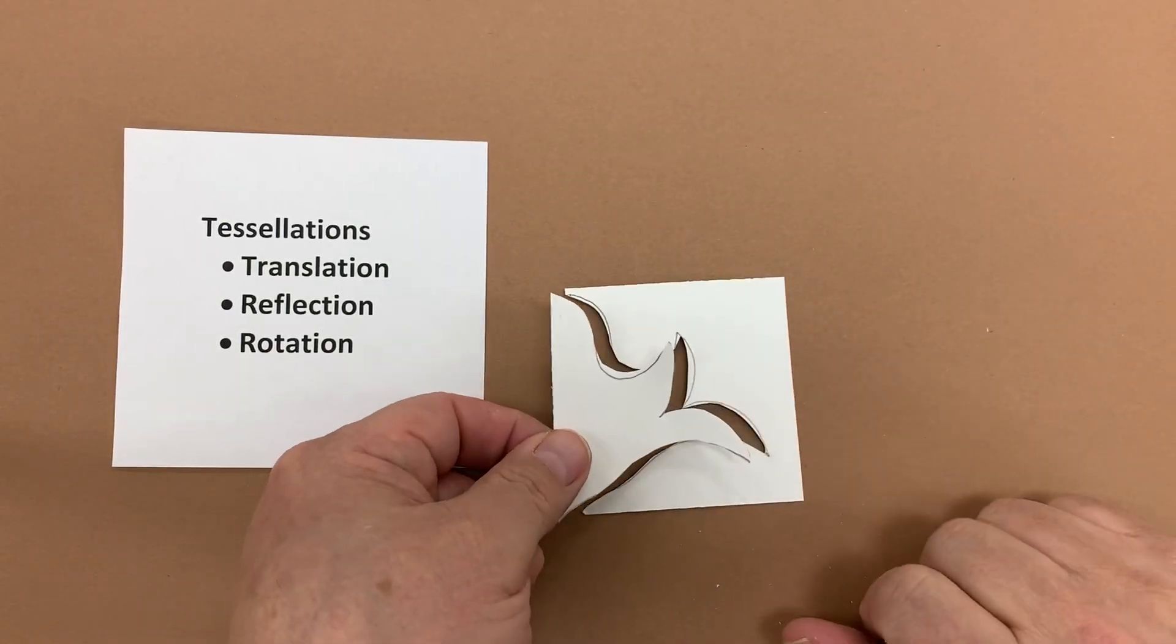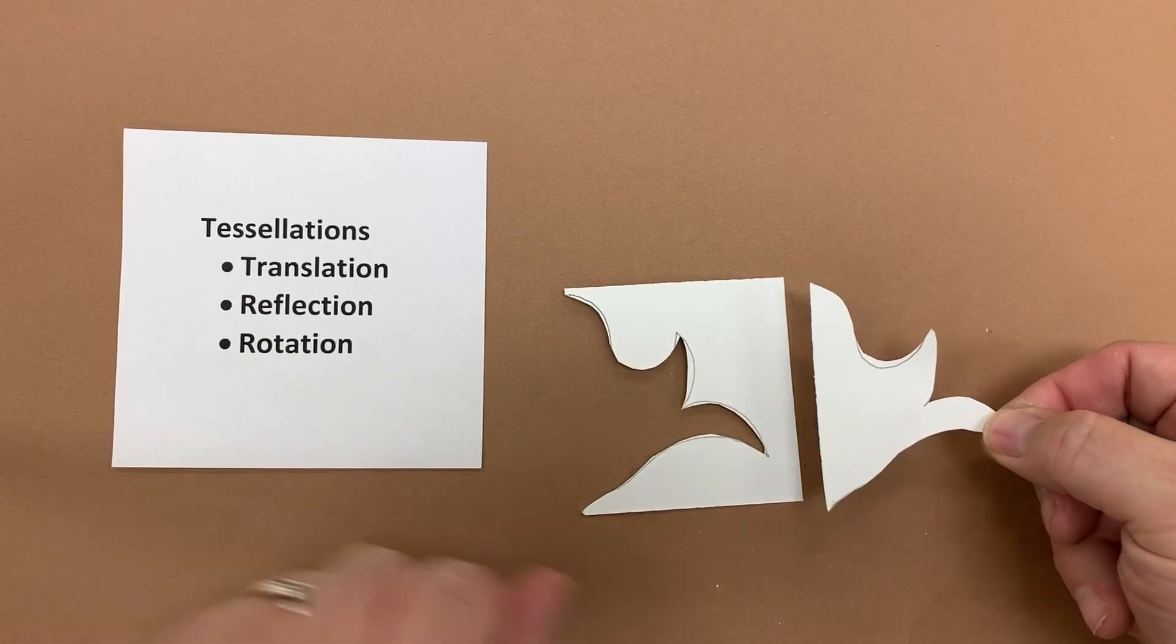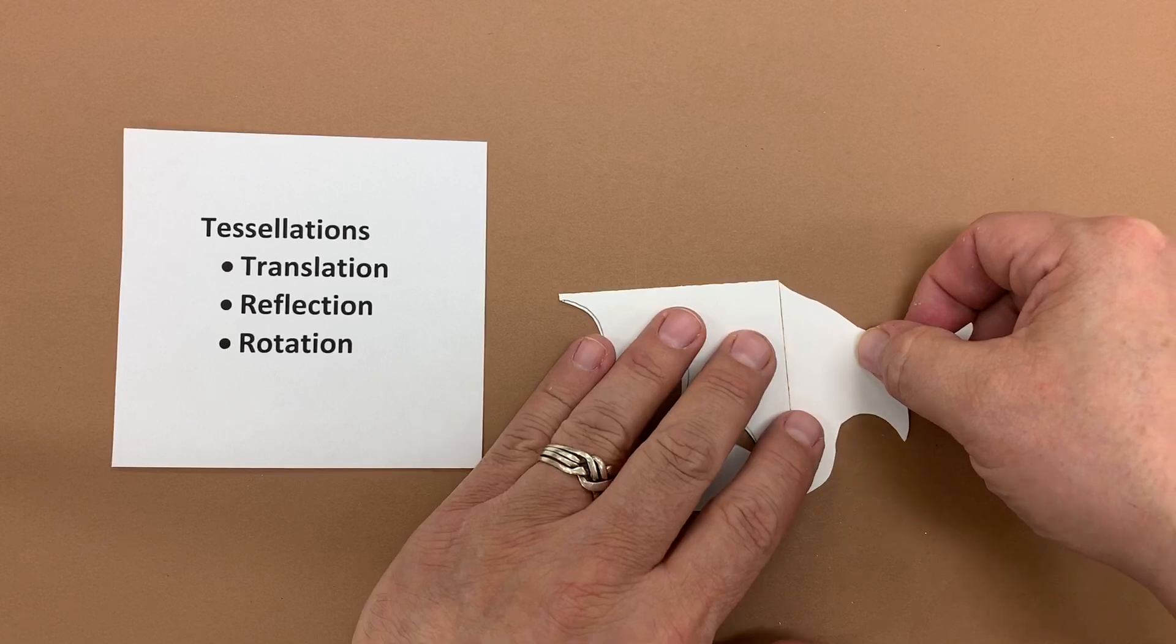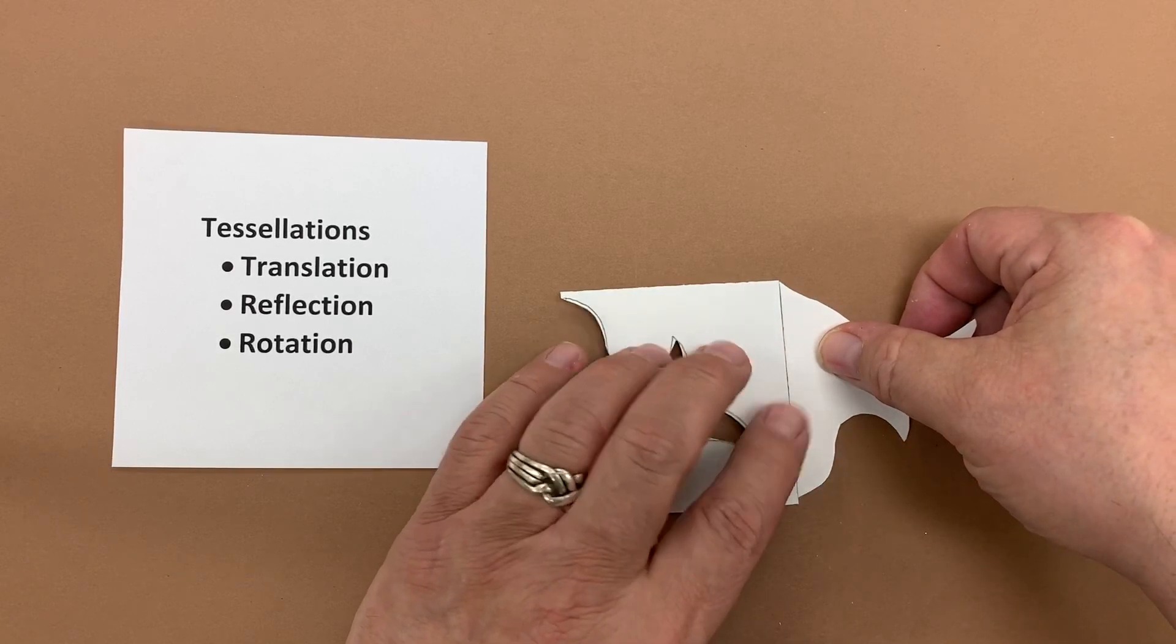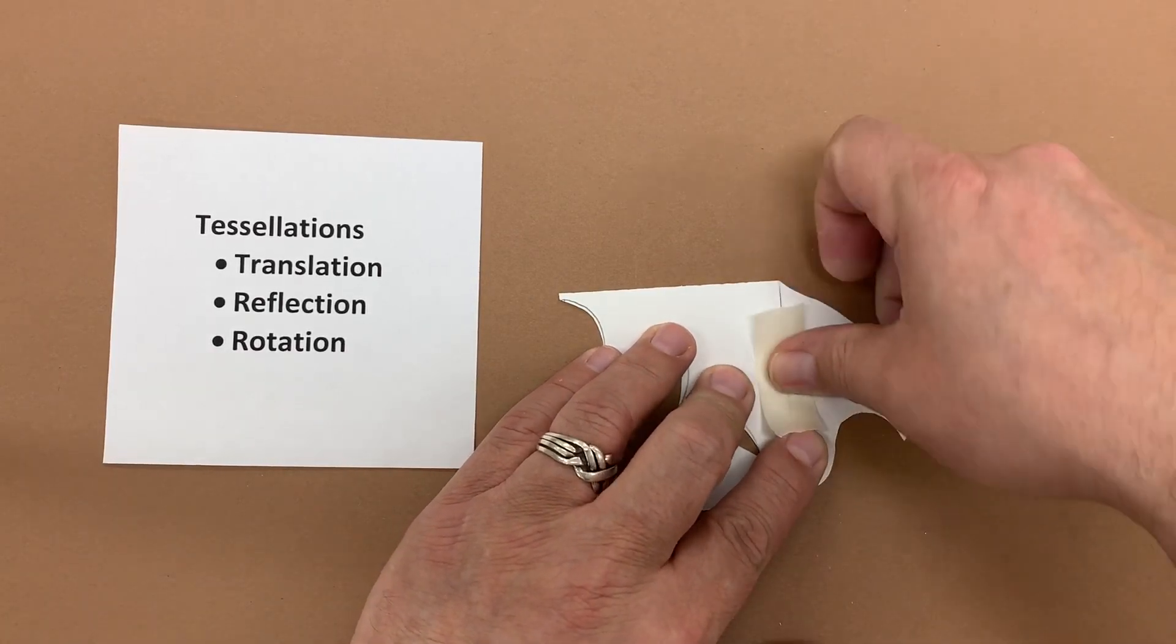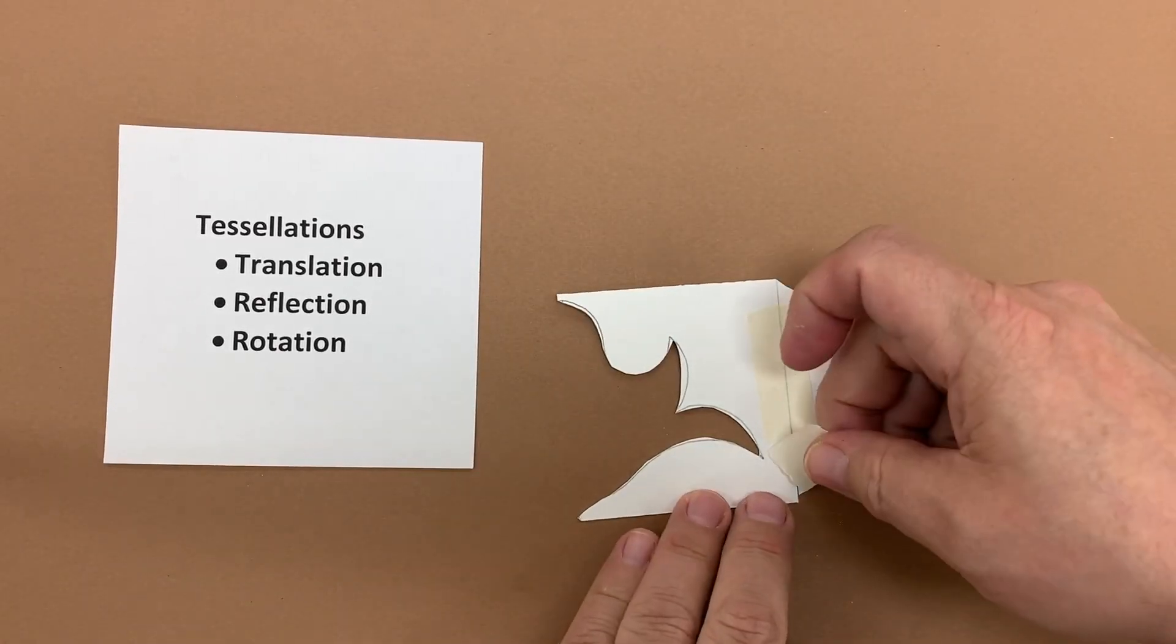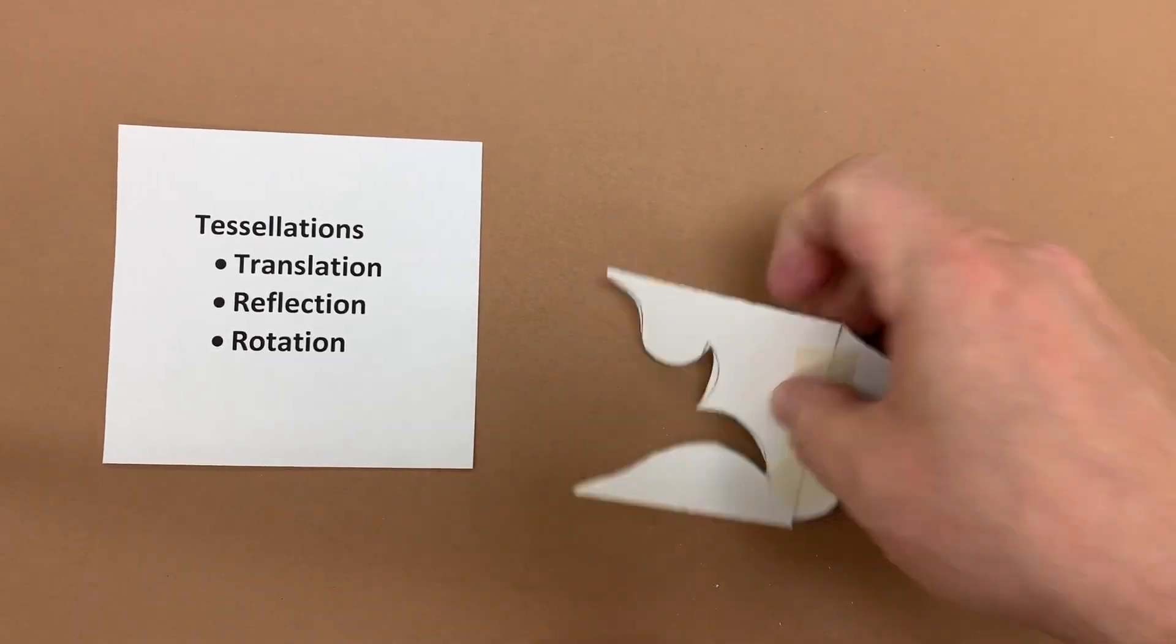For translation, we just brought the piece directly over. For reflection, we bring it over and then we flip it and attach it. This time I am going to make sure that my corners match up. And I want to make sure that there is no gap or overlap between the pieces.